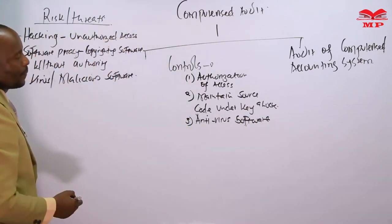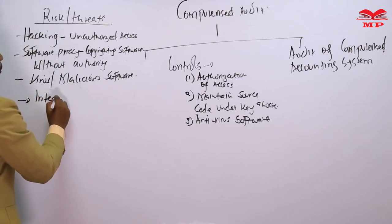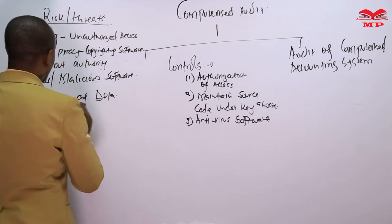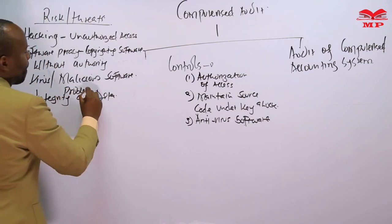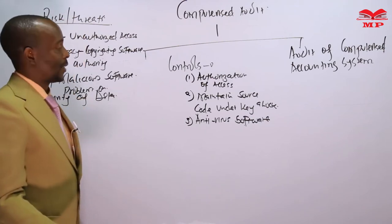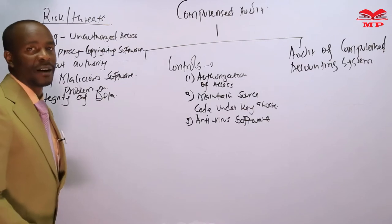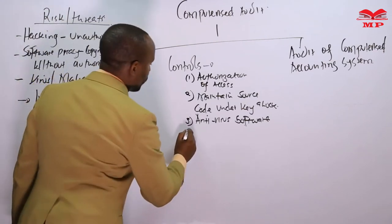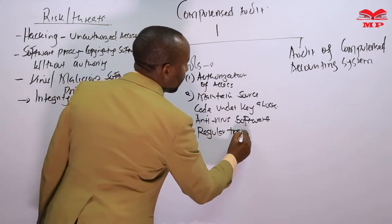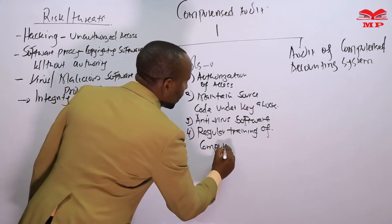There is also a problem with integrity of data. If you are studying management information systems you'll know that when we talk about integrity of data, we mean the data is not complete or not accurate — either because the user does not understand the system or maybe the user does not have the necessary knowledge and competence. Therefore, we need to introduce a control: regular training of computer users.